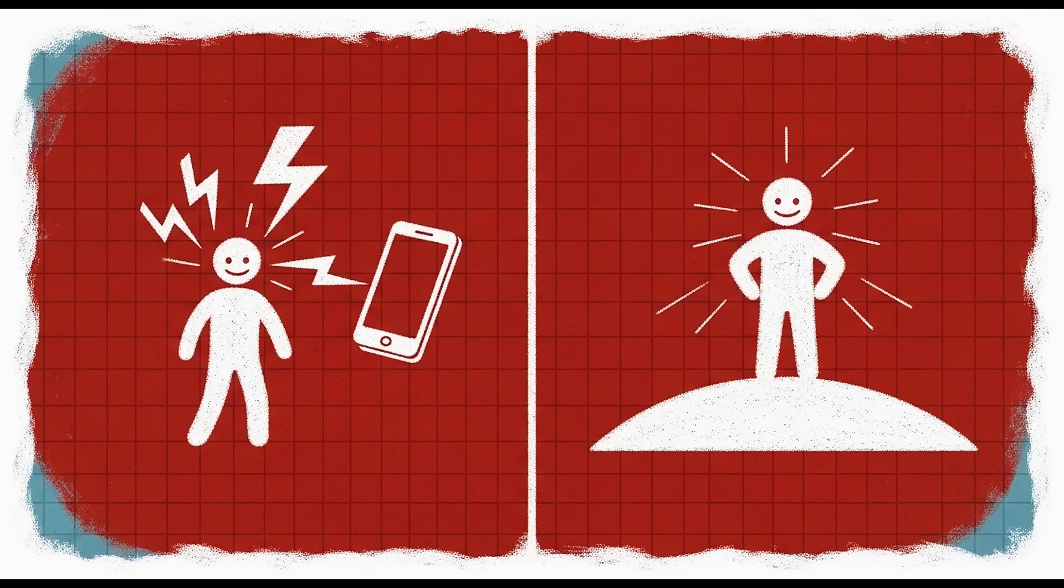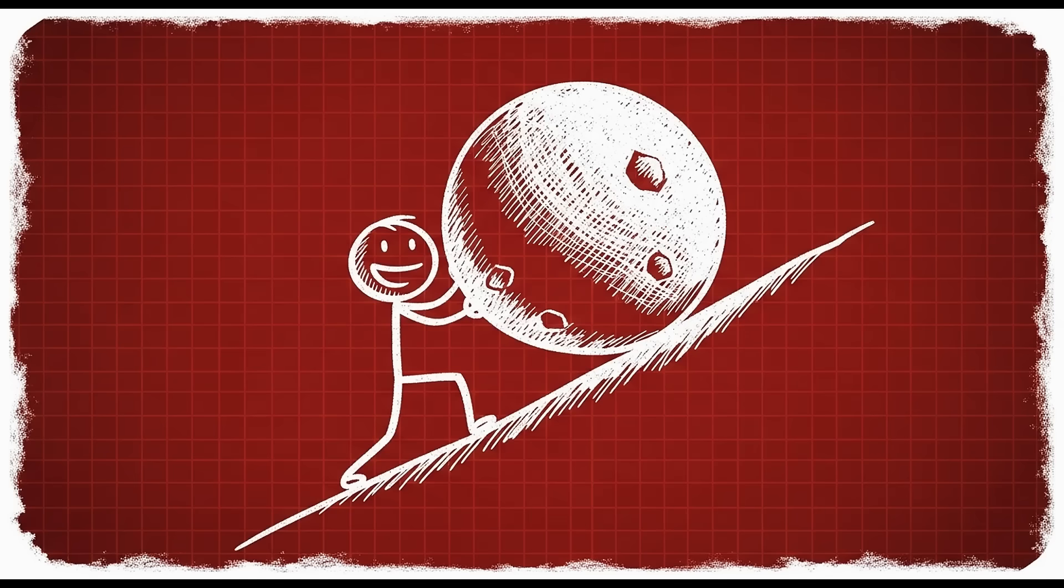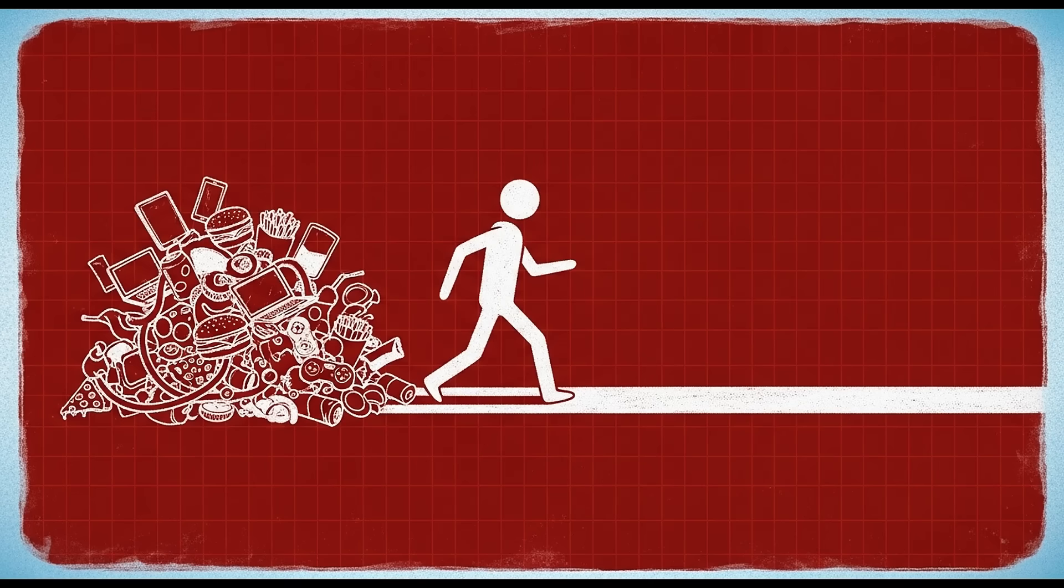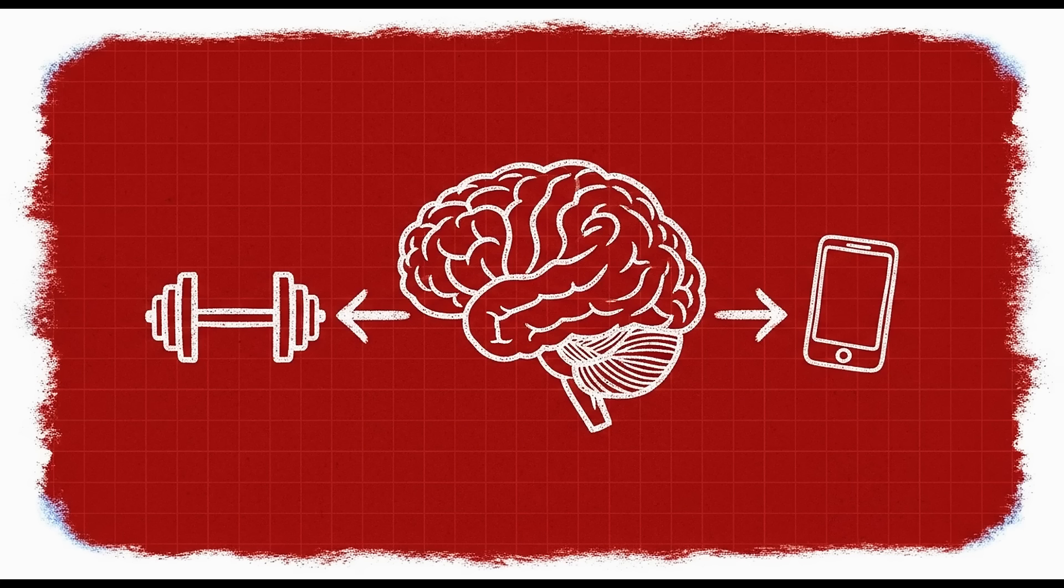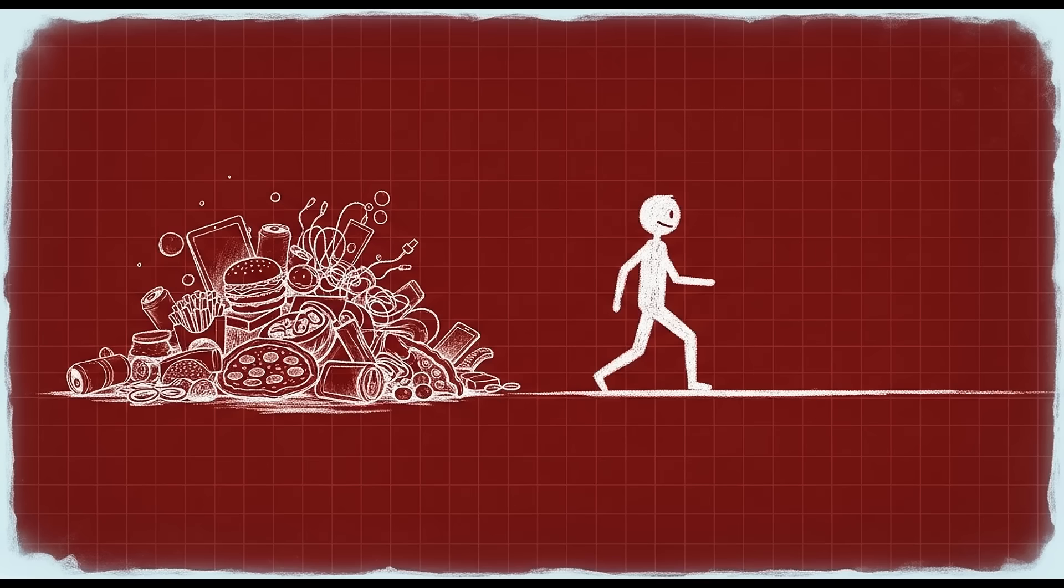Here's what you need to do practically. Start by identifying your highest dopamine activities. Not the things you enjoy most, but the things that require the least effort for the most stimulation. For most people, this is their phone, specifically social media, short-form video content or games. But it could also be junk food, online shopping or pornography. Whatever gives you intense pleasure with minimal effort, that's your target.